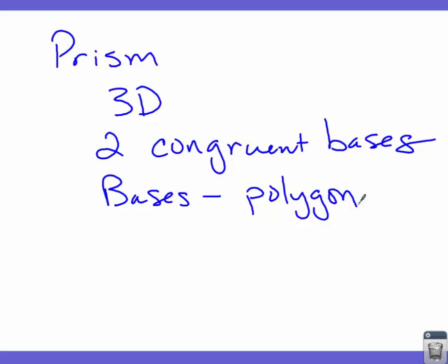The base must be a polygon — it has to have edges and corners. So those are the conditions for a prism.